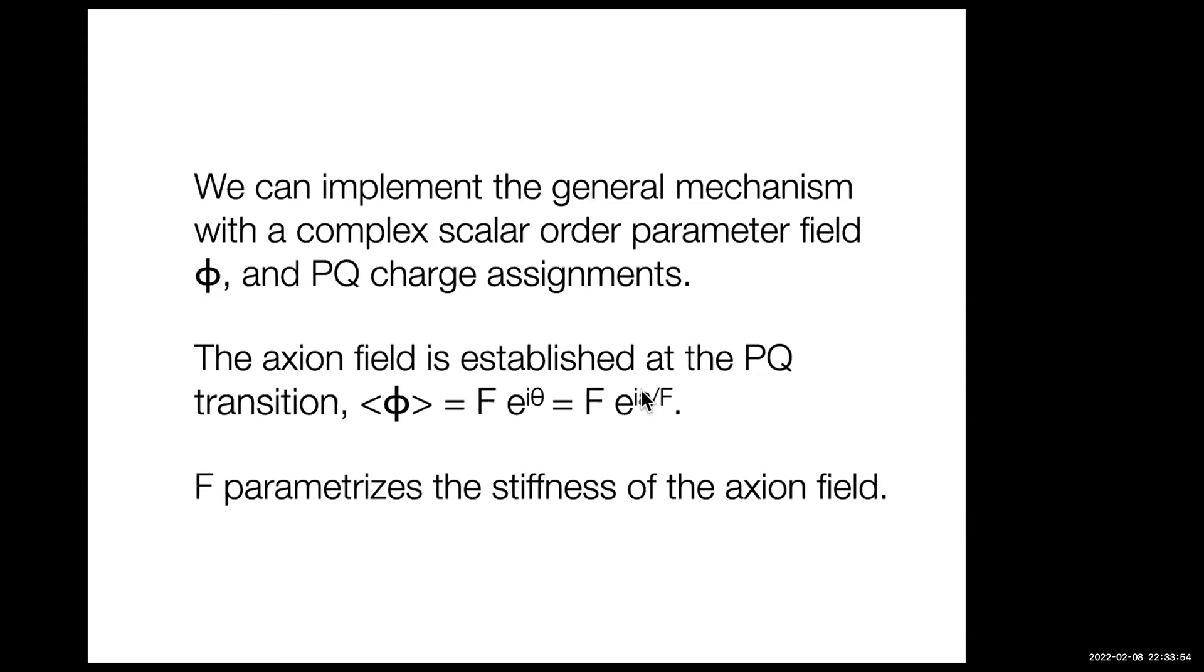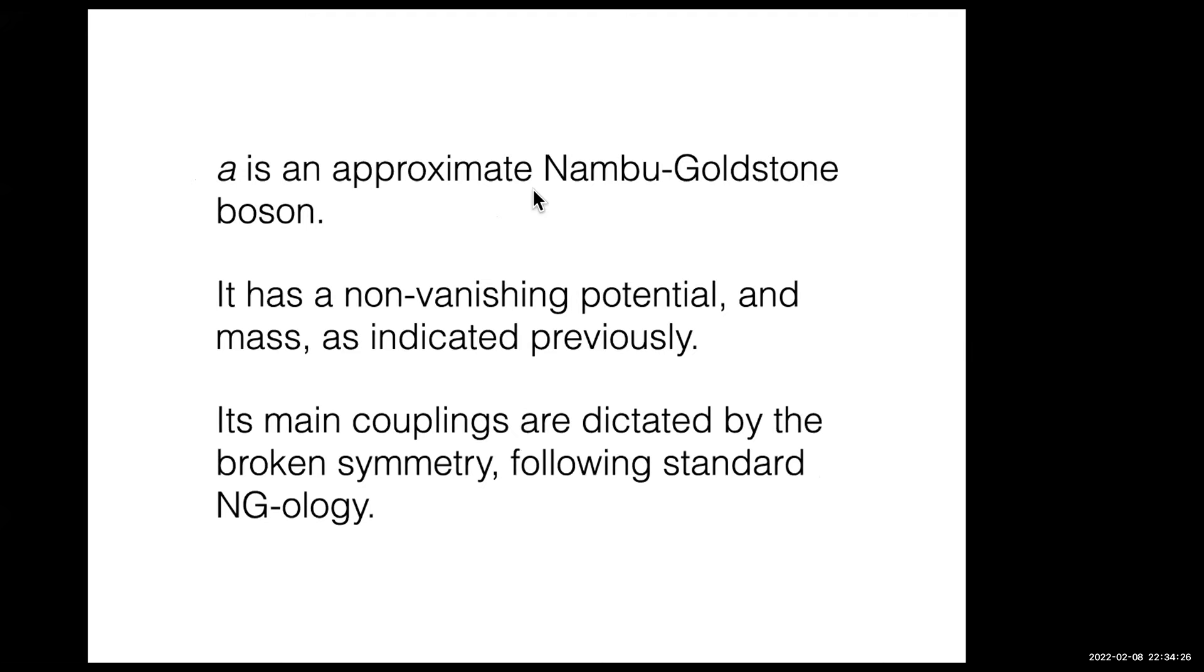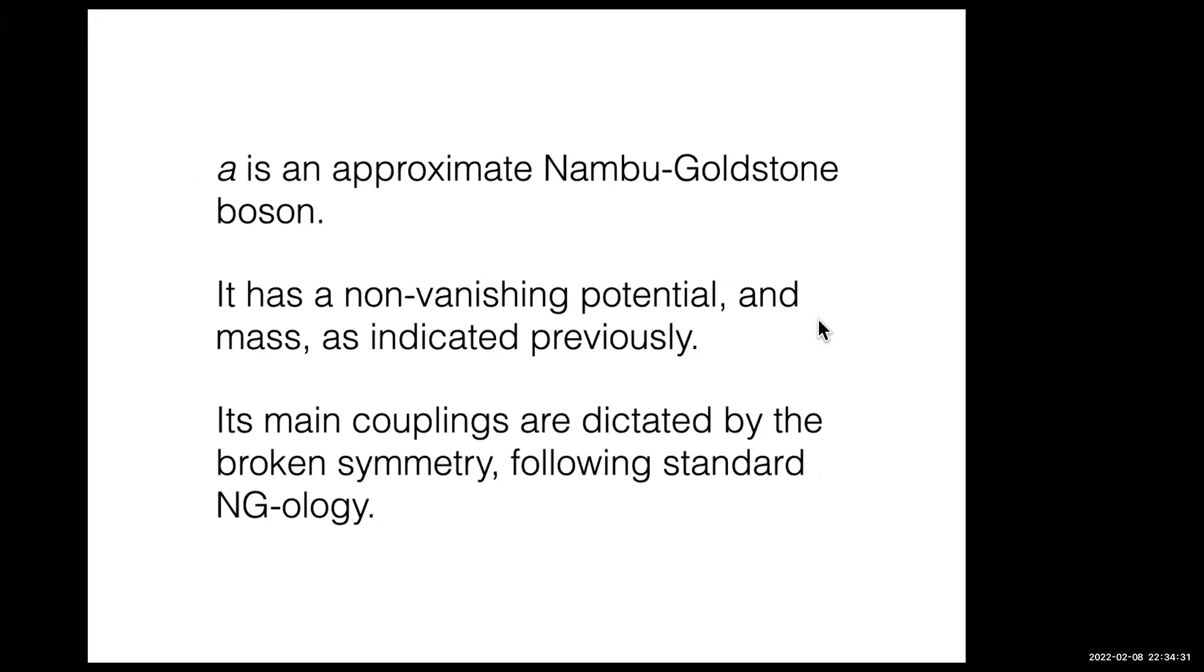F, the magnitude of the condensate parameter, is the stiffness of the axion field. The A field's kinetic energy - when you take the gradient and square it, the F's cancel. But all the couplings of the axion field will occur in the form A over F. So if F is very large, the axion field will be weakly coupled. The underlying field of which it's the phase oscillation is very, very stiff. Symmetry dictates the exact form of the axion coupling.